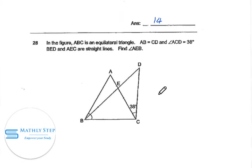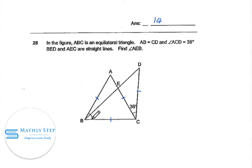Question 28. In the figure, ABC is an equilateral triangle, so we know all sides are equal. AB and CD are equal, so CD is also equal to BC. Angle ACD is 38 degrees, and BCD and ABC are straight lines. Find angle AEB.